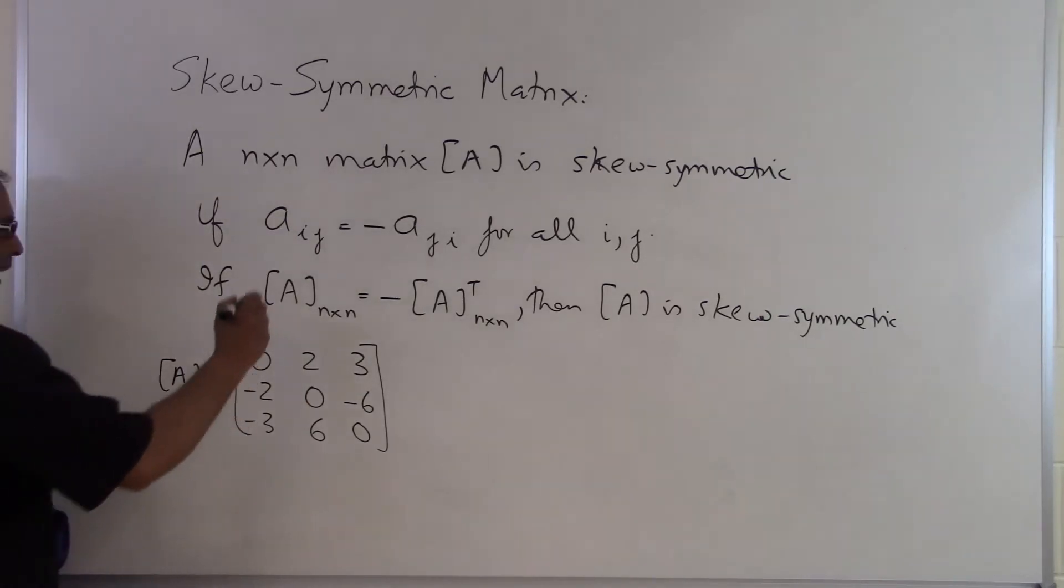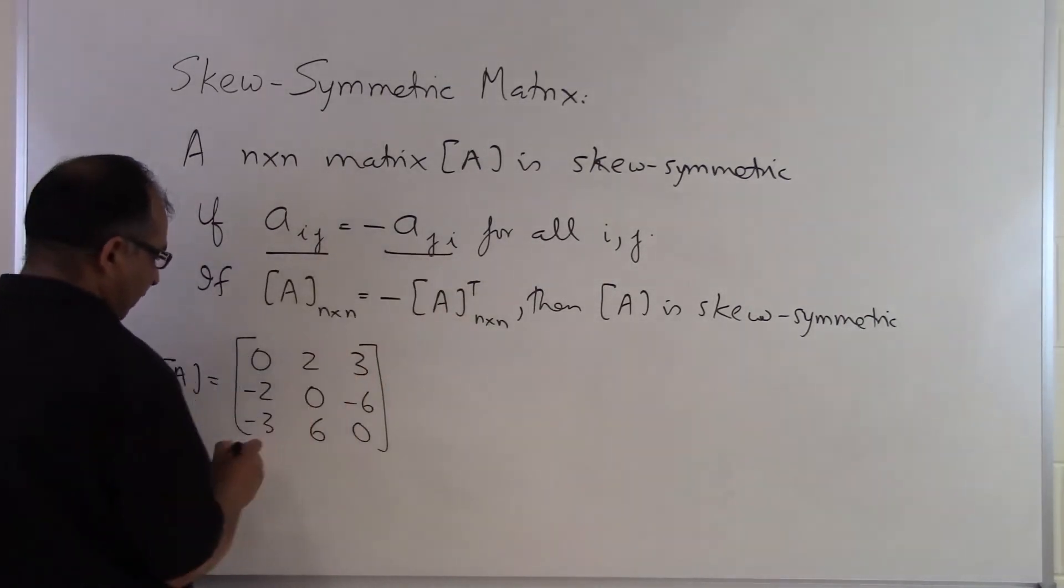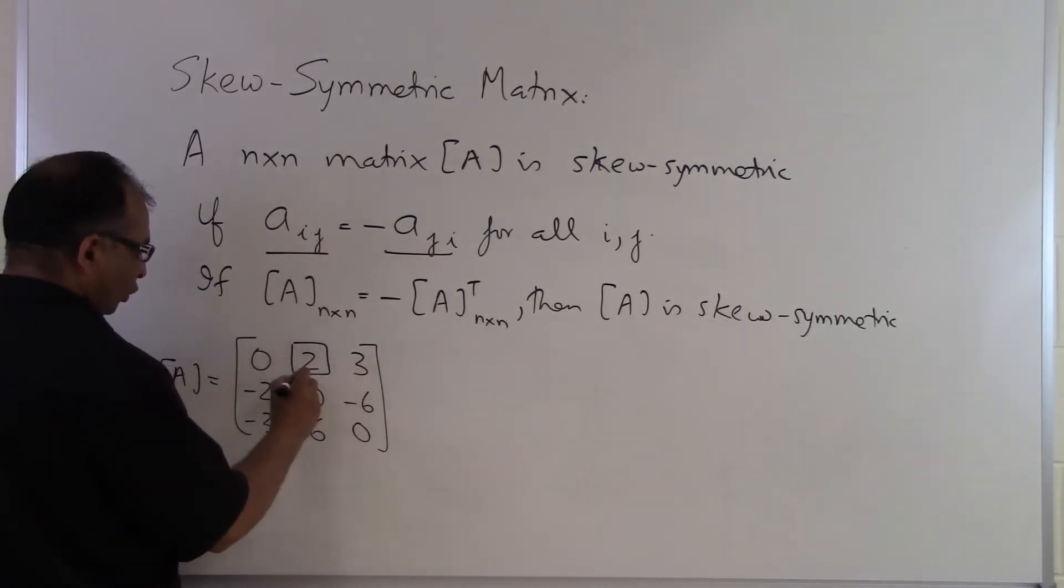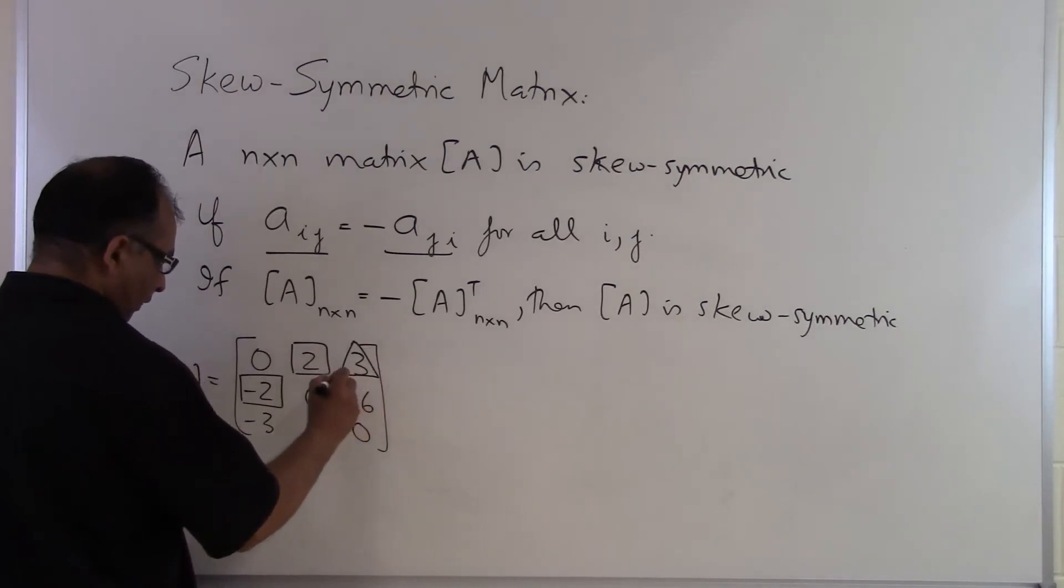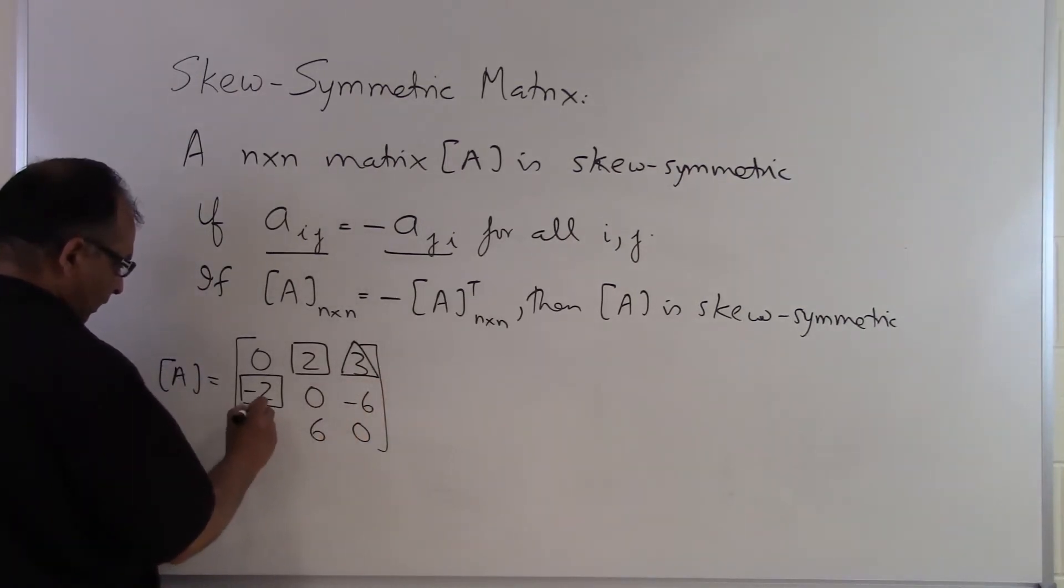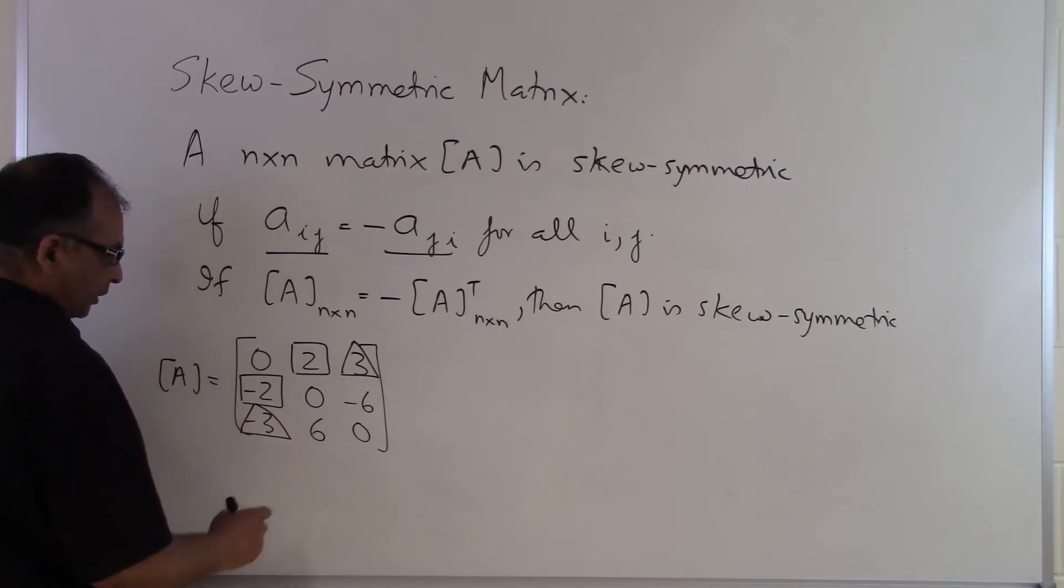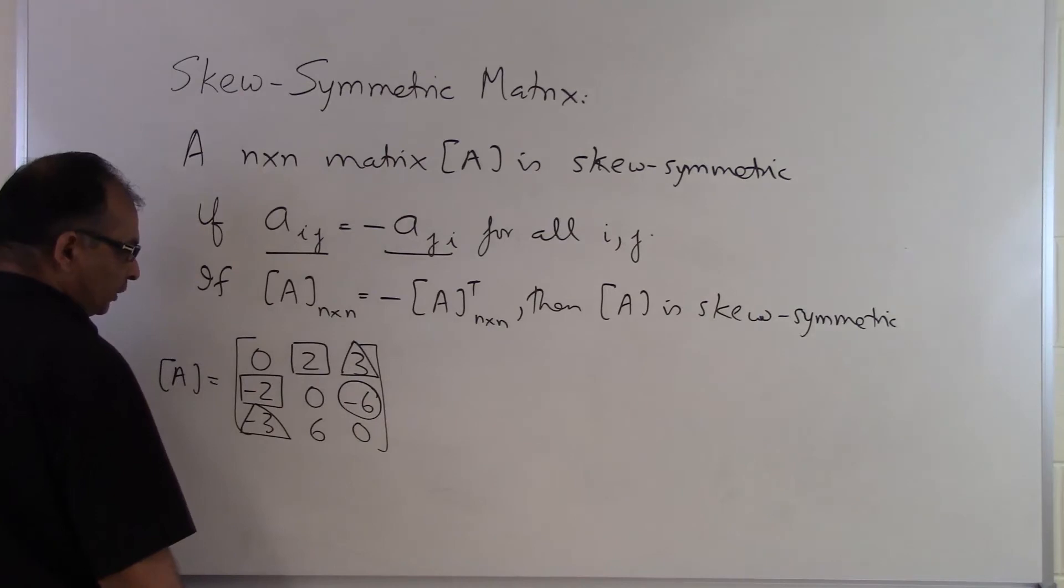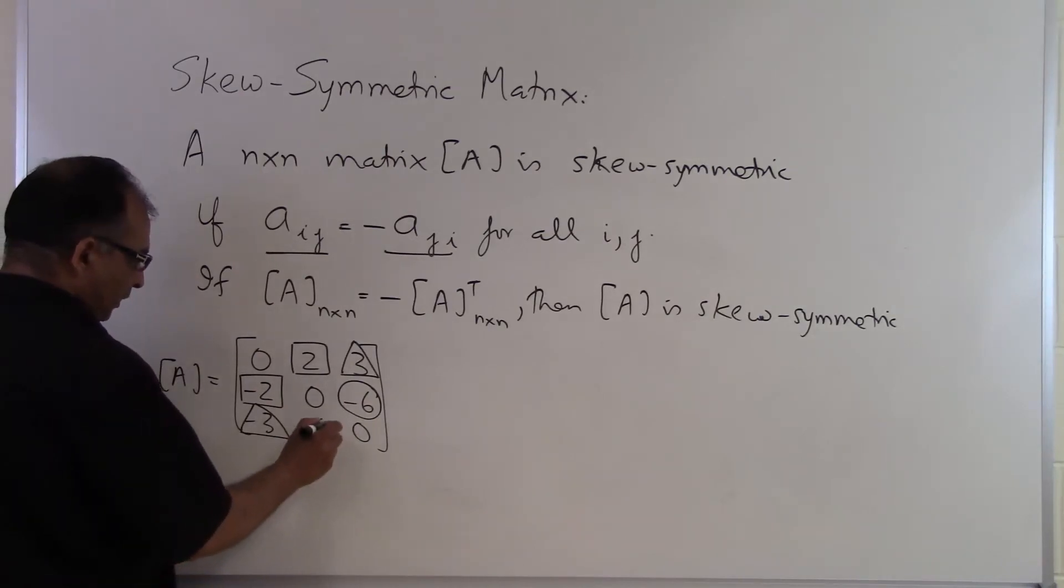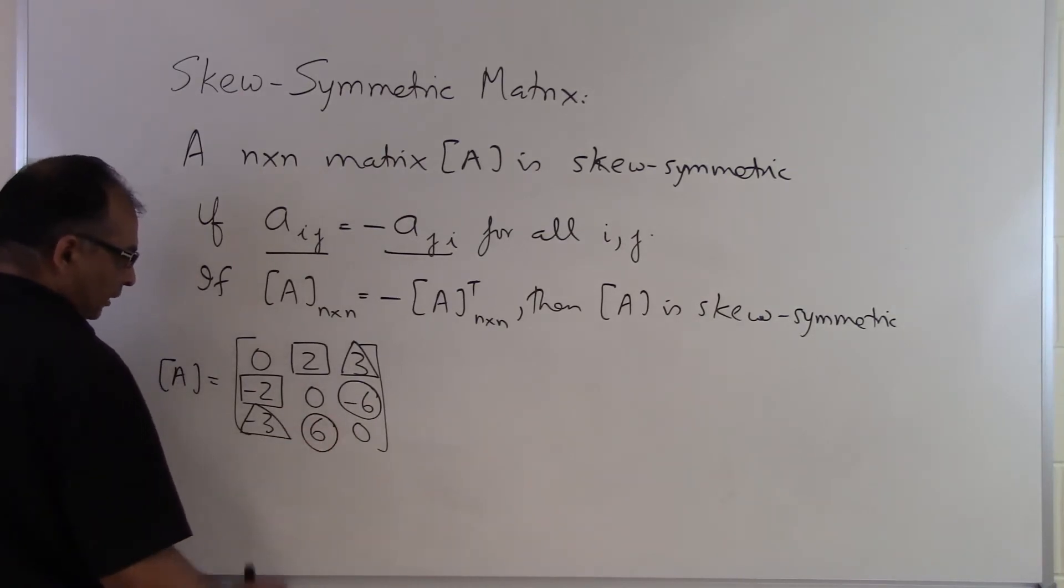And then what we are saying is that A_ij is same as minus A_ji. So you are looking at the first row second column is same as the second row first column but the only difference is negative sign. And then I have first row third column is same as the third row first column but the only difference is the negative sign. And then I have second row third column here which is minus six is same as the third row second column except for it is different by a negative sign.